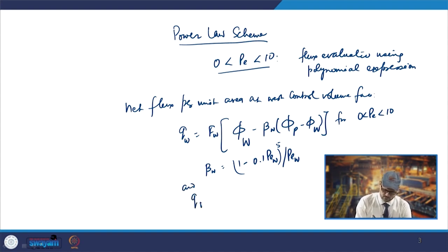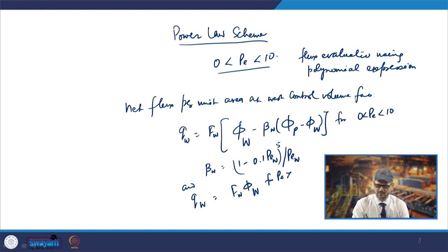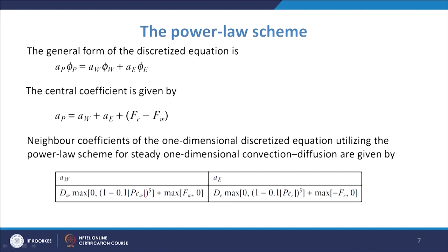When the Peclet number is more than 10, diffusion is assumed to cease and the scheme behaves as the upwind differencing scheme: q_W = F_W * phi_W, where the upwind node is phi_W. The central coefficient remains a_P = a_W + a_E + F_e − F_w, with a_W and a_E expressed in the power law form devised by Patankar.